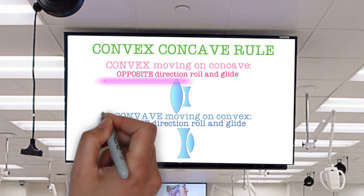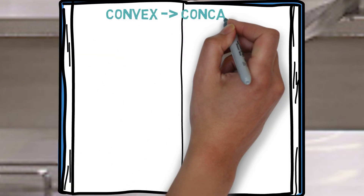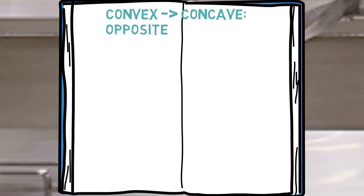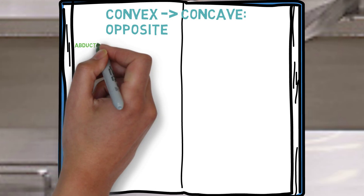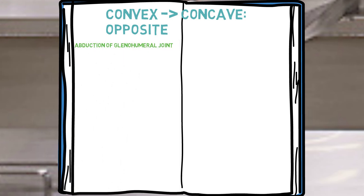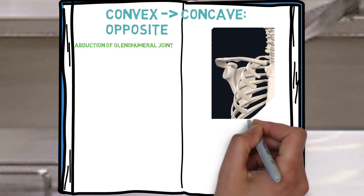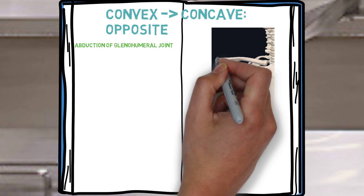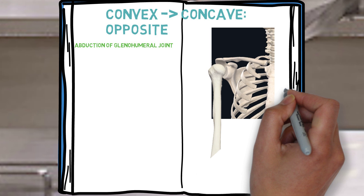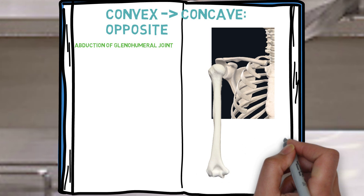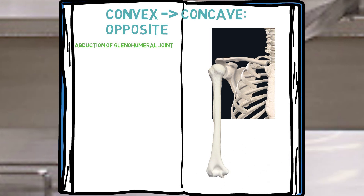Now let's take a closer look at some real-life examples. Here is a convex example first. An example here is shoulder abduction. The head of the humerus is convex, moving on a shallow concave glenoid. The roll and the glide will occur in the opposite directions of one another. Hence, with upper extremity elevation, the humeral head will roll in a superior direction and glide in an inferior direction.